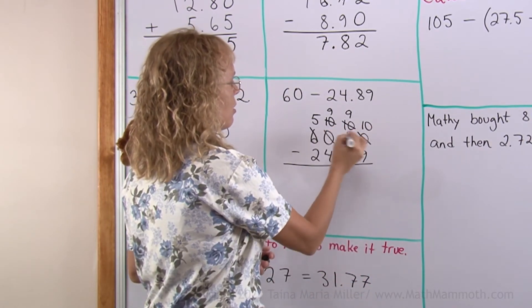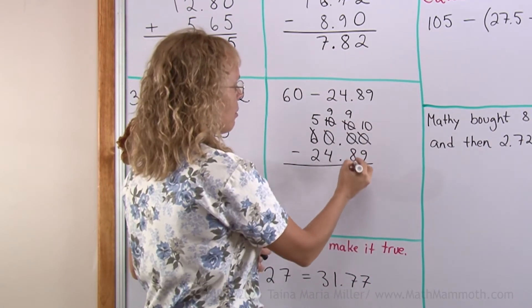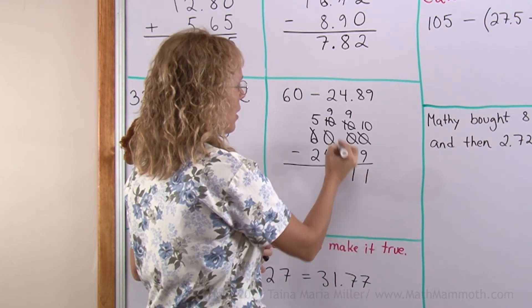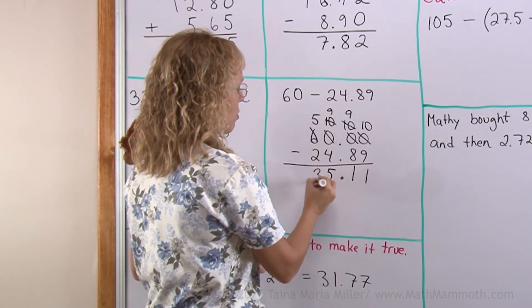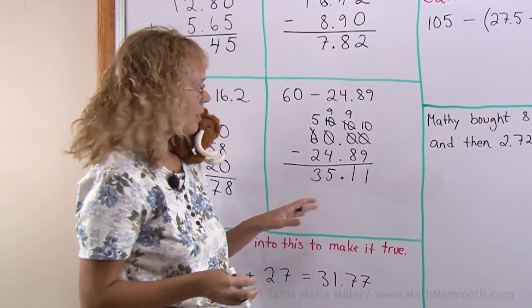And now you subtract. These are gone. Ten minus nine is one. Nine minus eight, one. Nine minus four, five. And five minus two, three. And you could check this by adding.